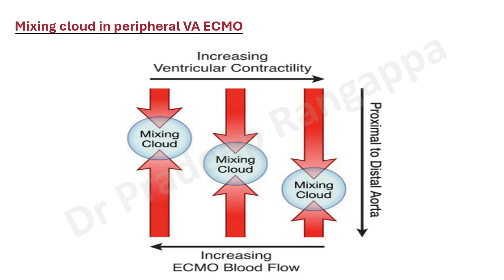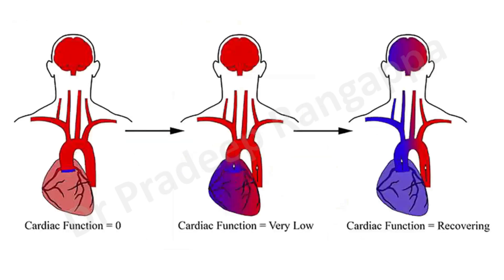To show pictorially: with improving ventricular contractility, the mixing cloud moves from proximal to midway and more distally. You may also need to reduce your ECMO blood flows as heart function improves and the patient may not need VA ECMO anymore. When cardiac function is absolutely zero, VA ECMO works perfectly — oxygenated blood goes everywhere. But if cardiac function starts resuming and the lung has not recovered, that is when differential hypoxemia starts affecting other organs because hypoxemic blood is ejected from the major vessels coming out of the aorta.